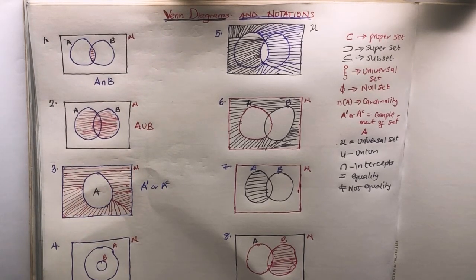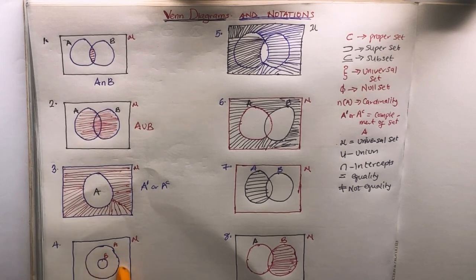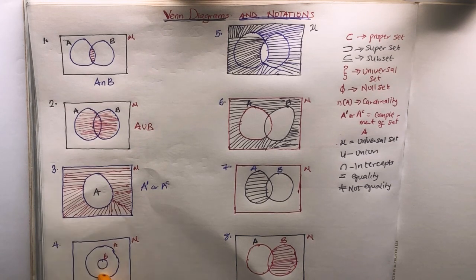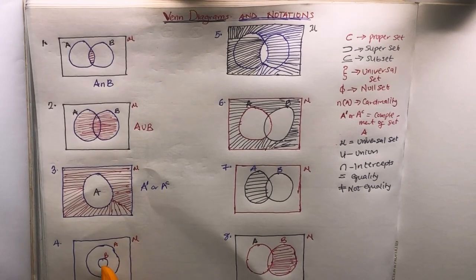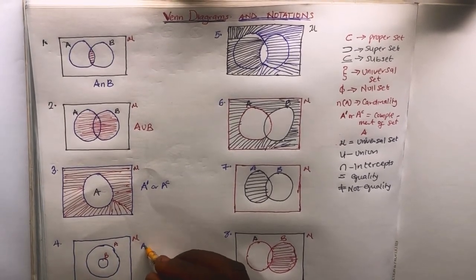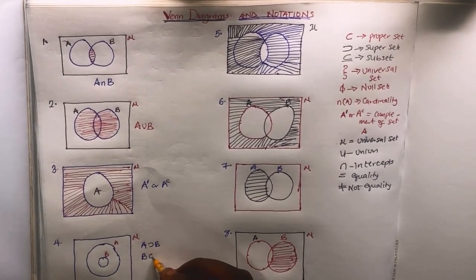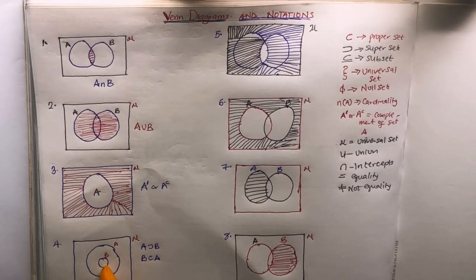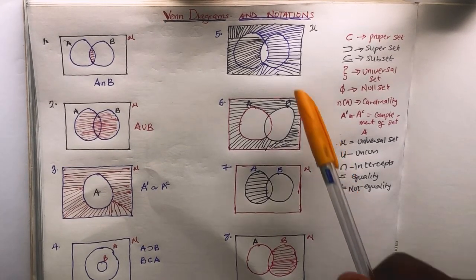Now if you have set A and set B is inside set A, what do you call this — a proper subset, a subset, or a superset? If you look at it carefully, A is a superset of B, and B is a proper subset of A. Very simple: A is a superset of B, and B is a proper subset of A.